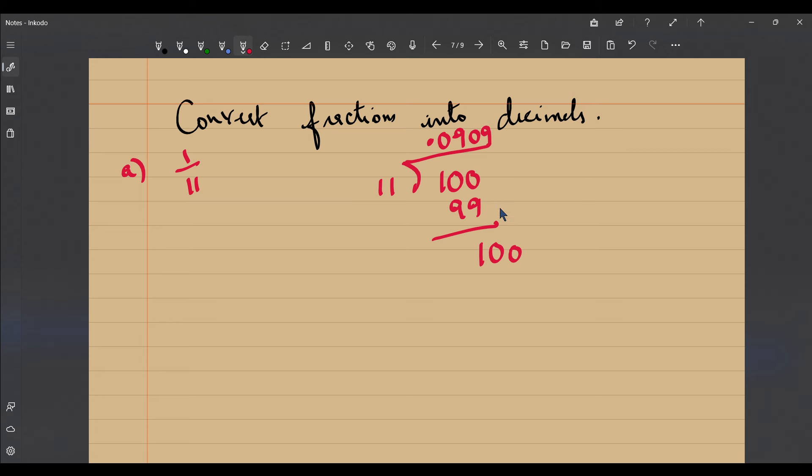So once again 9 is a hundred and this is going to continue the same thing. So 1 by 11 is equal to 0.0909 or it can be represented as 09 bar to show that this is a repeating decimal - this is a non-terminating recurring decimal.